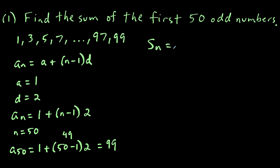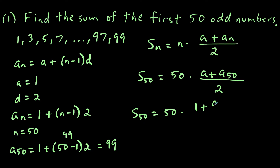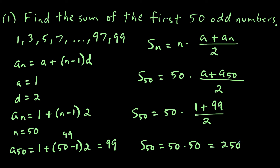The shortcut partial sum formula is S sub n equals n times (a plus a sub n) divided by two. So the sum of the first 50 terms equals 50 times (1 plus 99) divided by two. That's 50 times 100 divided by two, which is 50 times 50, giving us 2500. The sum of the first 50 odd numbers is 2500.